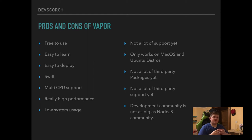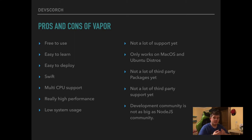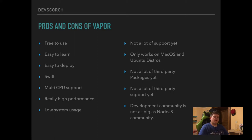Cons of Vapor: not a lot of support yet, because it's relatively new. Swift came out as open source in 2014, and around 2015–2016 developers started building frameworks for backend use. It only works on macOS or Ubuntu distributions, so if you're on Windows there's no way to work with or run Swift. There are not a lot of third-party packages yet — companies like PayPal and Stripe don't officially support Swift, so developers have to write their own packages. There are some good packages on the Vapor GitHub, but it takes time.